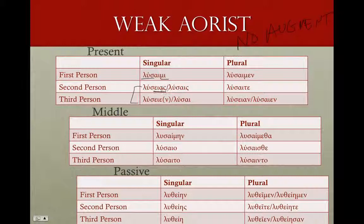This alternate ending is more common in Attic Greek. So λύσαις or λύσειας — which is what you'd expect. But in Attic Greek: λύσειας, λύσειε with the movable nu, or λύσαι. The more common Attic forms are: λύσειε, λύσαιμεν — exactly what you'd expect — λύσαιτε, and λύσαιεν or λύσειαν.